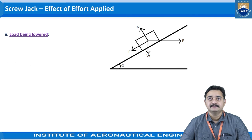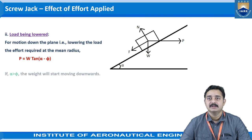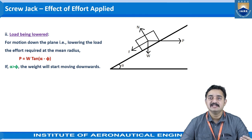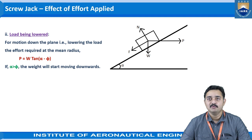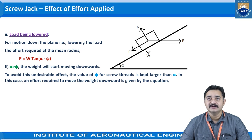Case 2 — load being lowered: for motion down the plane, the effort required at the mean radius is P = W·tan(α − φ). If φ < α (inclination α is greater than φ), the weight will start moving downwards on its own without any external force — an undesirable effect. To avoid this, the friction angle φ for screw threads is kept larger than α (the screw inclination). In this case, the effort required to move the weight downward is P = W·tan(φ − α), and some effort is needed to lower the load. The effort P1 at the end of the lever is obtained from P1·L = P·rm.